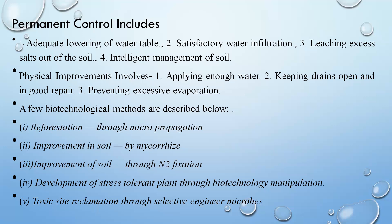For physical improvement of wasteland, steps include: applying enough water to the soil to make it fertile, keeping drains open and in good repair, and preventing excessive evaporation — especially in dry areas where a particular soil loses too much moisture. Additionally, reforestation through micro-propagation — simply growing more and more plants — can improve soil productivity.